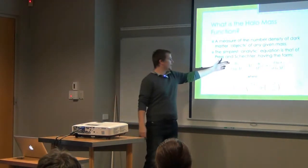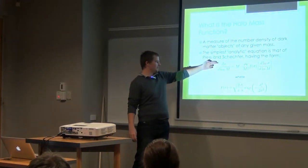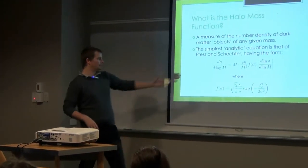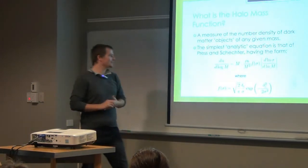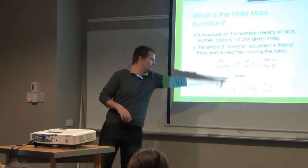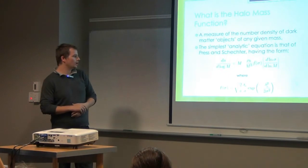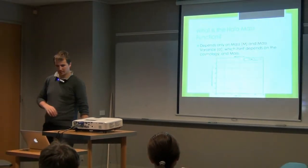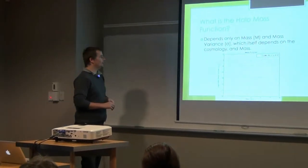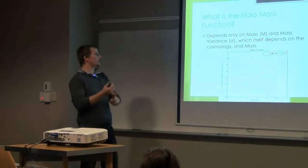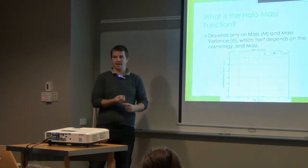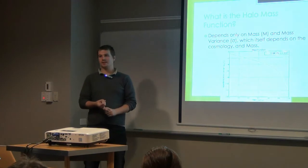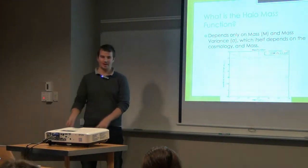So the number of objects, or the number density of objects per logarithmic interval in mass, equals this equation here, where this f of sigma term here is a function of the mass variance. So here is what it sort of looks like, which is probably more useful. Basically, to note is that it depends on the mass and the mass variance. And the mass variance itself depends on the cosmology and the mass. So basically in the end it depends on the cosmology and the mass.